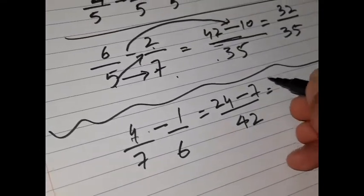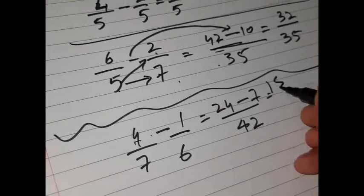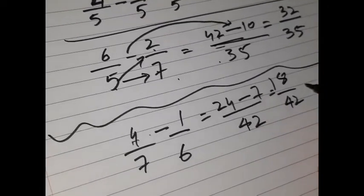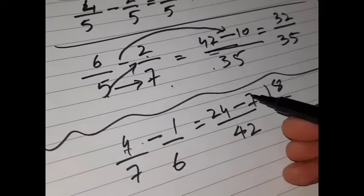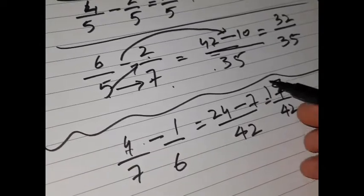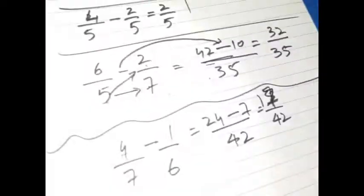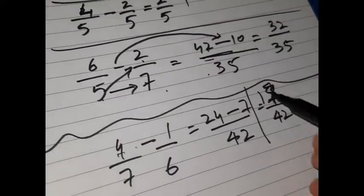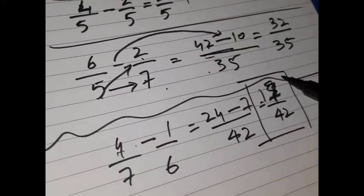24 minus 4 is 20, and 5, 6, 7 - that's 3 more. So 17 over 42 should be my number. Now let me rewrite it, because in maths we say it's better to rewrite instead of override.